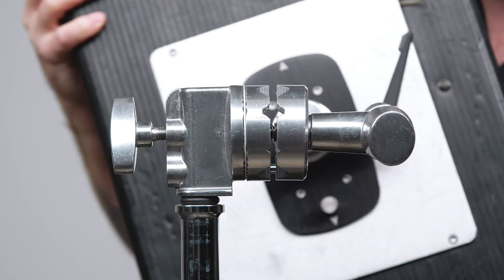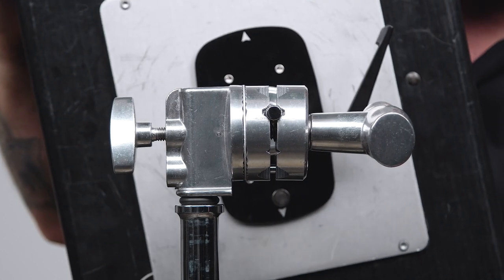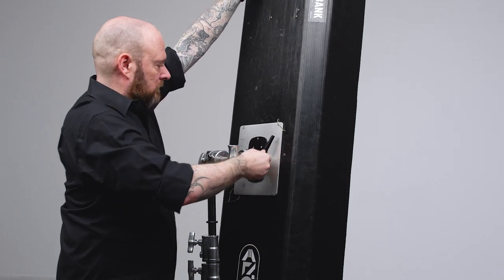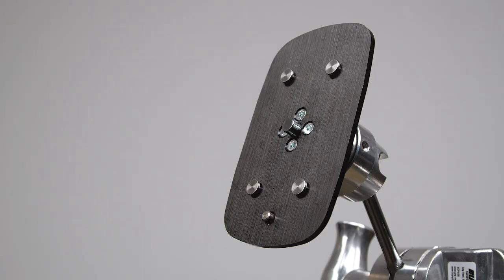allow you to quickly mount your Kino Flow single, double, four bank, and barfly fixtures using a standard two and a half inch grip head. This adapter consists of a Kino Flow